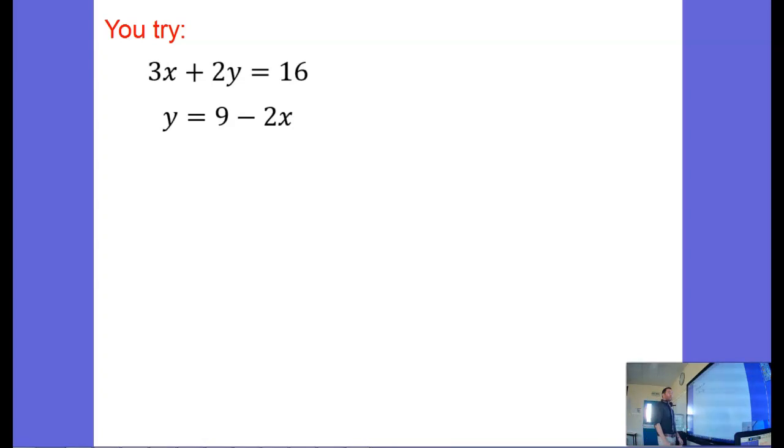Okay, let's do it. Y equals 9 minus 2x, so I'm going to substitute that into the first equation. 3x plus 2 lots of y. Now y is 9 minus 2x, equals 16. Let's expand the brackets.